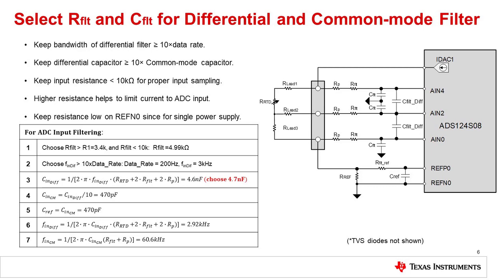Here we select the input filter and input current limitation. The first step is to select a value for RFilt. RFilt acts as both a protection and a filter resistor. The minimum value for RFilt was calculated previously when choosing the current limiting resistor R1 for the IDAC pin — R1 was calculated to be 3.4K ohms. For the analog inputs, there is no current flow, so it is possible to choose much larger resistors. Nevertheless, to minimize sampling-related errors, it is recommended to keep the input filter resistance less than 10K ohms. Here we select 4.99K ohms as the standard value between 3.4K and 10K.